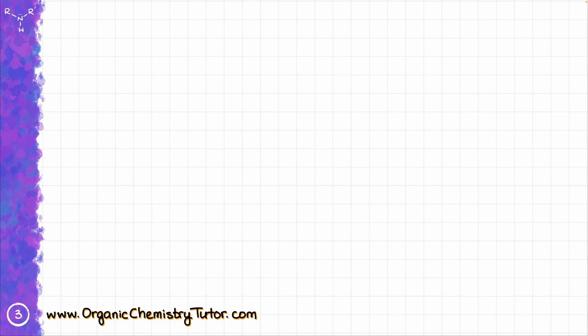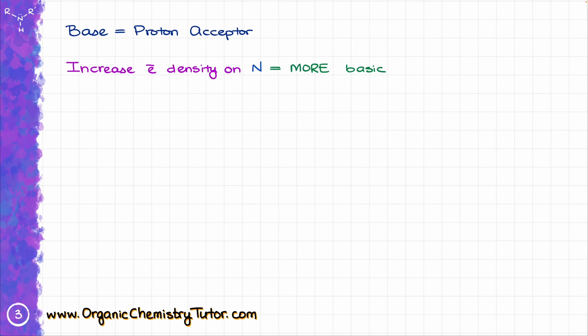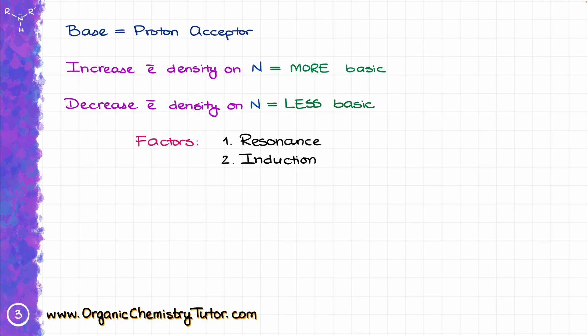If a base is a proton acceptor, that means that anything increasing the electron density on the nitrogen will make it more basic, while anything decreasing the electron density on nitrogen will make it less basic. The typical factors we've seen in acid-base chemistry apply here: resonance, induction, hybridization, and steric hindrance. We are skipping electronegativity and atomic size, because we are predominantly dealing with nitrogen-containing species, so those factors are never going to be applicable.